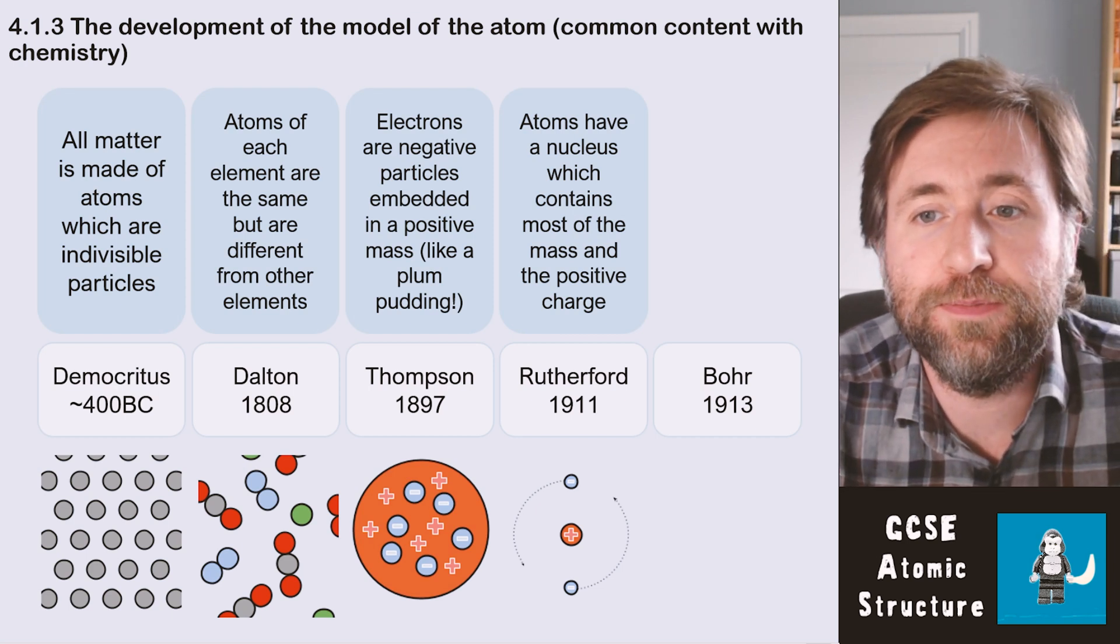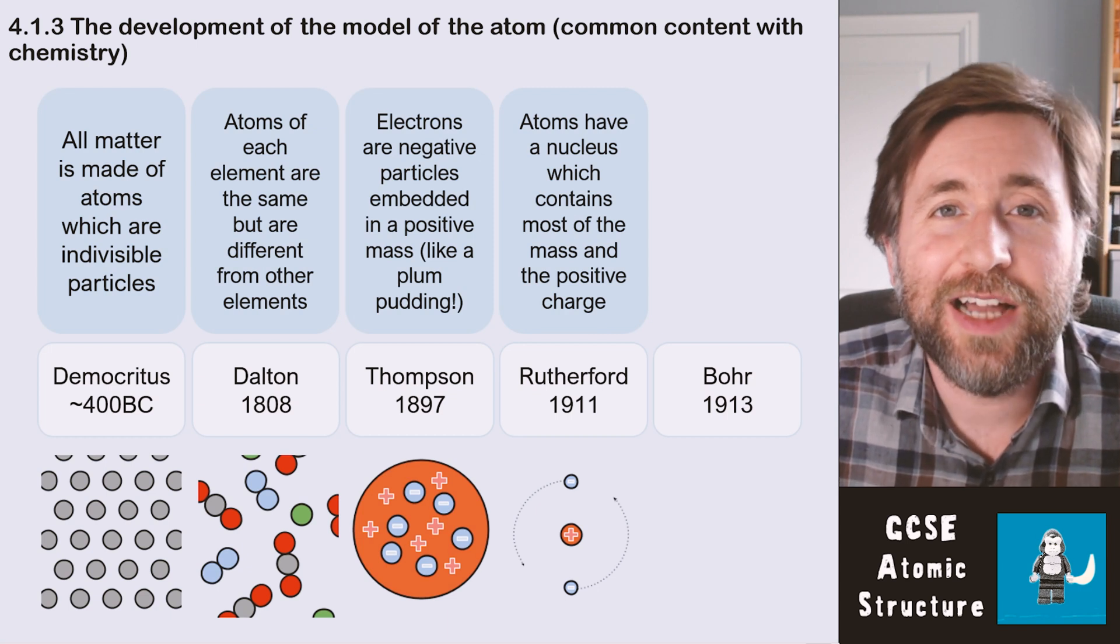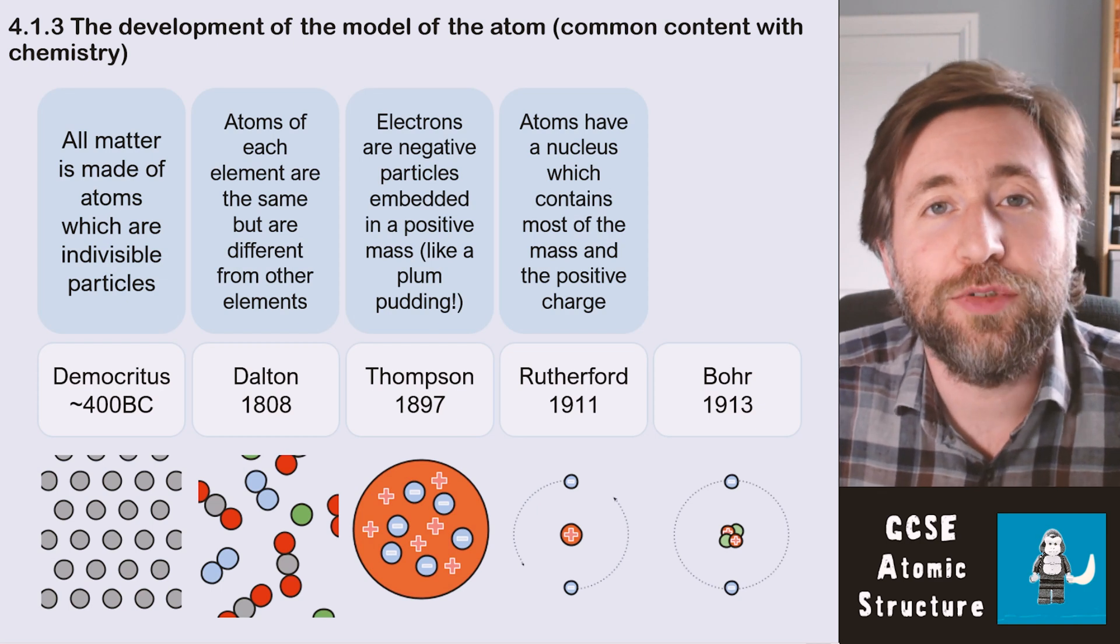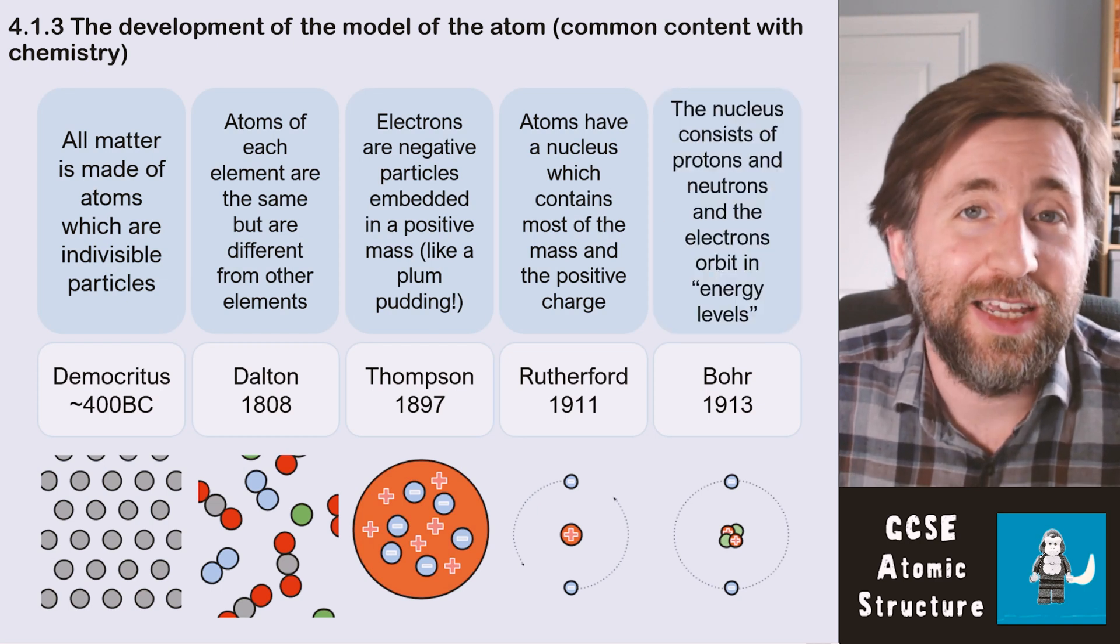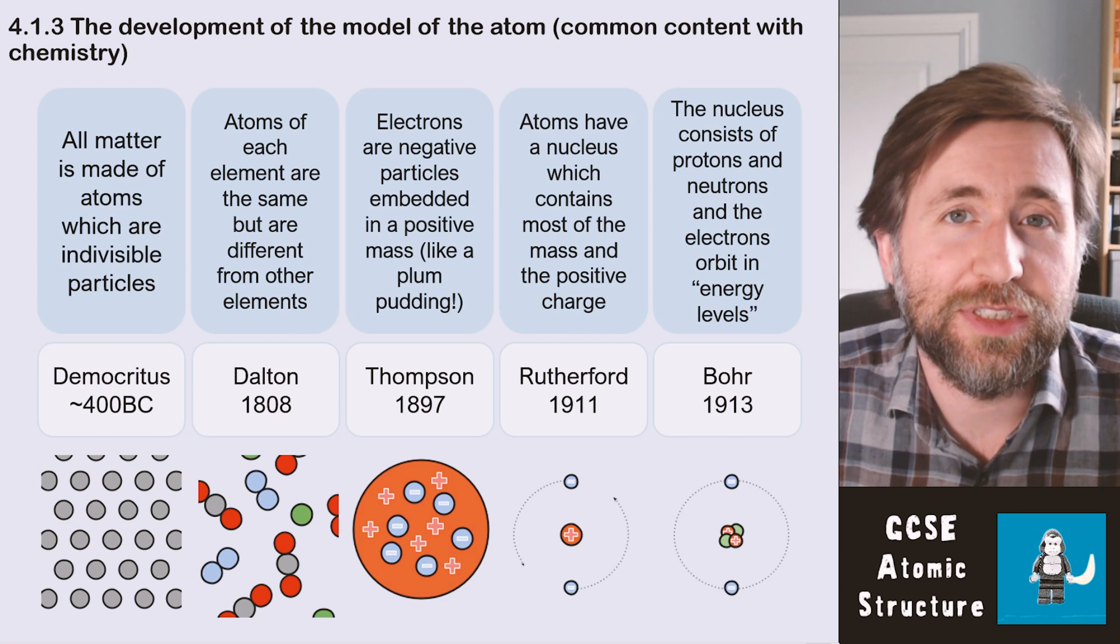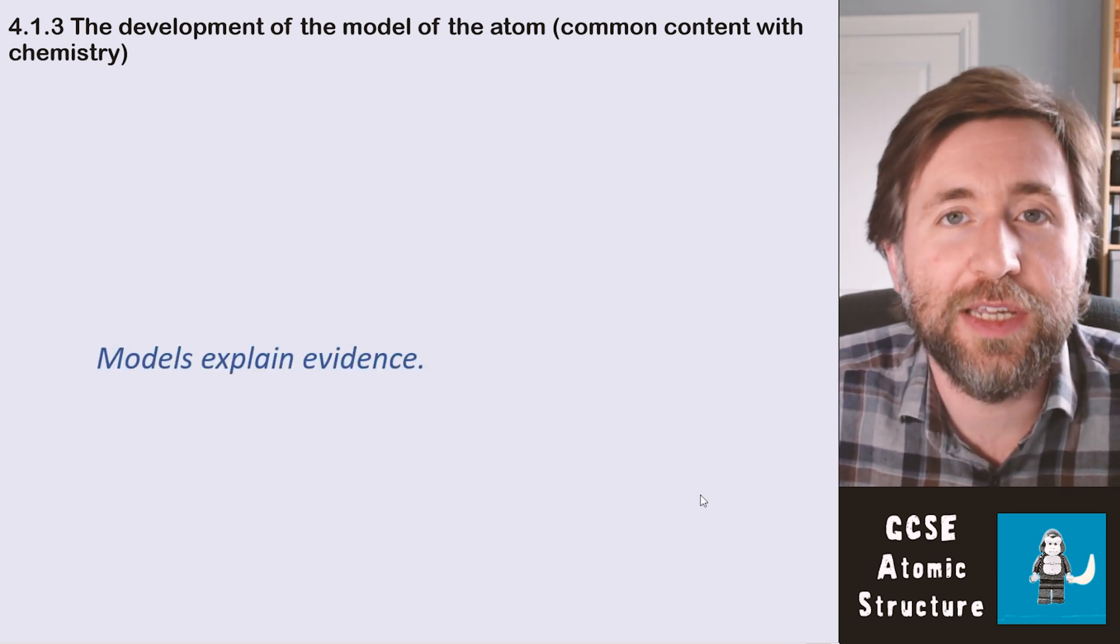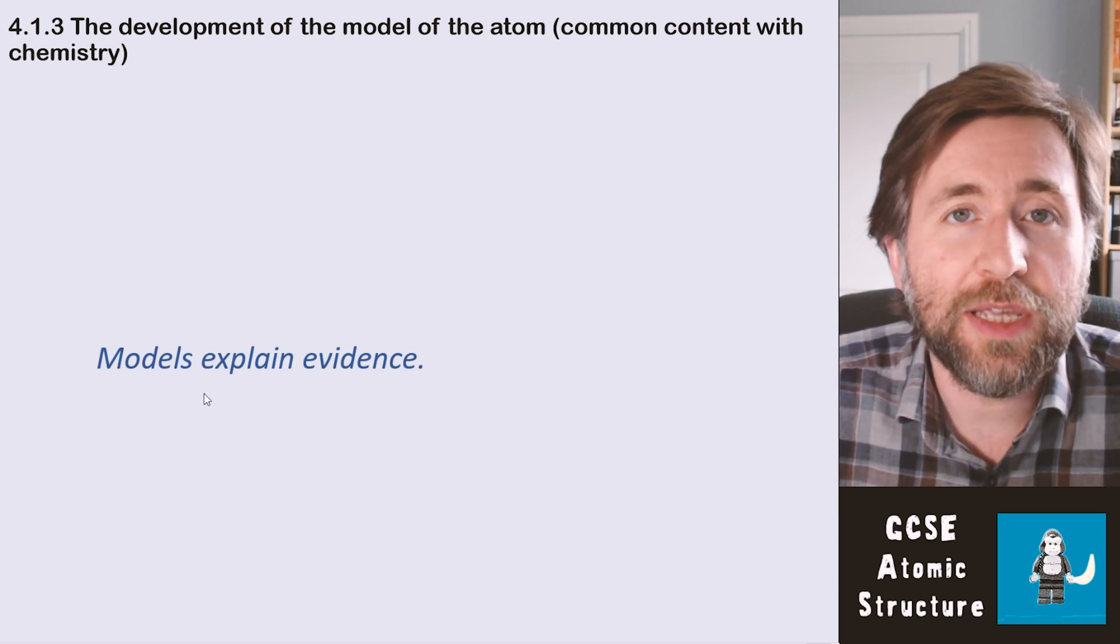The Bohr model as we use it today adds the idea of the nucleus itself being split down into protons and neutrons, and that the electrons have a certain amount of energy in fixed energy levels of which they orbit. The most important part about this topic is that models explain evidence. If a model doesn't explain the evidence, then we have to change it.